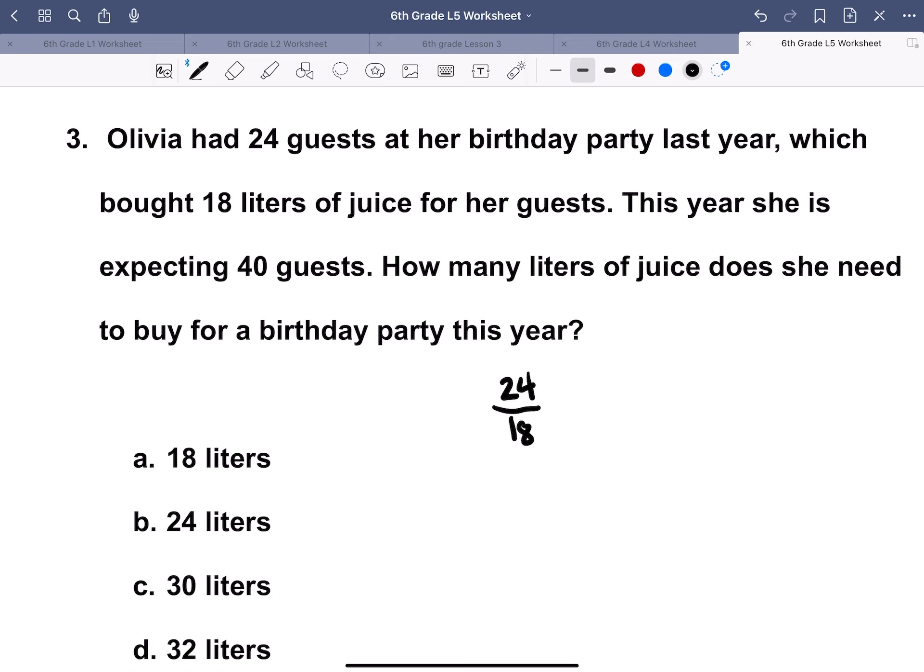To solve this problem, we need to get the number of guests at her birthday party, 24, and 18 liters. We can't divide that by so, so we'll reduce here. We'll divide this by 6 to get 4 over 3. This year she is expecting 40 guests. What we do is we get 40 guests. We want to match, so we know this is times 10. We need to multiply times 10 to get the denominator, which is 30. And this is the thing that we want, so 30 is our answer.